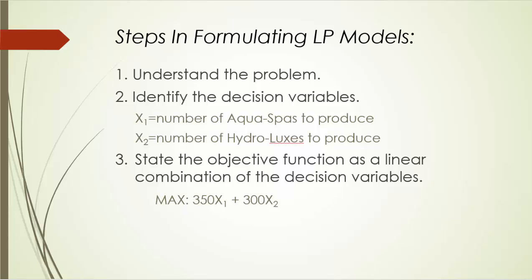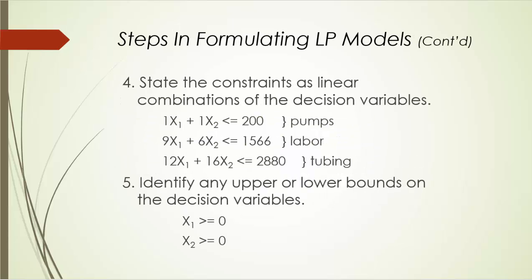Next, let's turn to the constraints. In step 4, we'll write down the constraints as linear combinations of the decision variables. In this example, we clearly have three resource constraints: pump constraint, labor constraint, and tubing or raw material constraint. The pump constraint says that the number of pumps used next month cannot be more than the number available. Since each hot tub needs exactly one pump, the total pumps used is 1·x1 + 1·x2, which must be no more than 200.